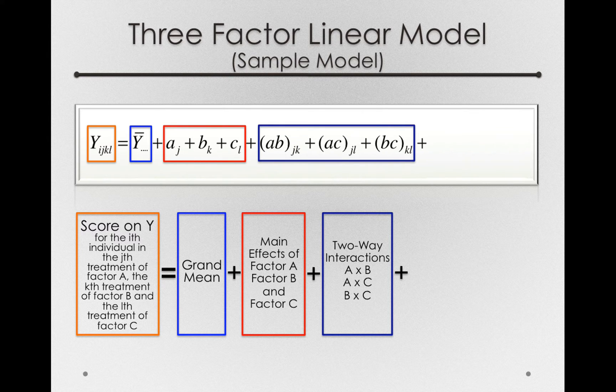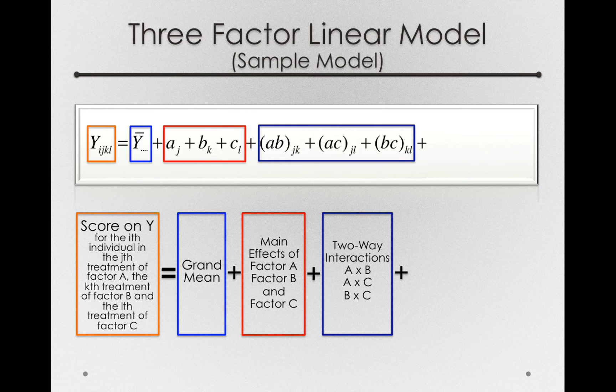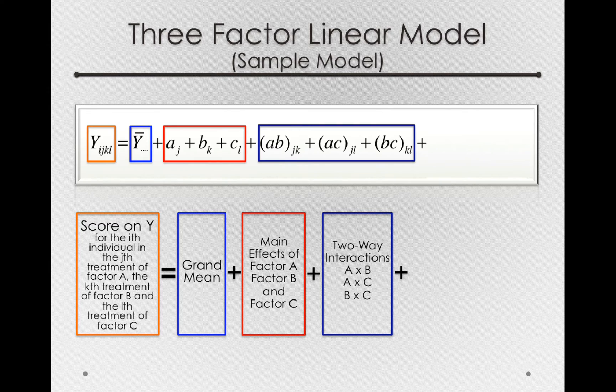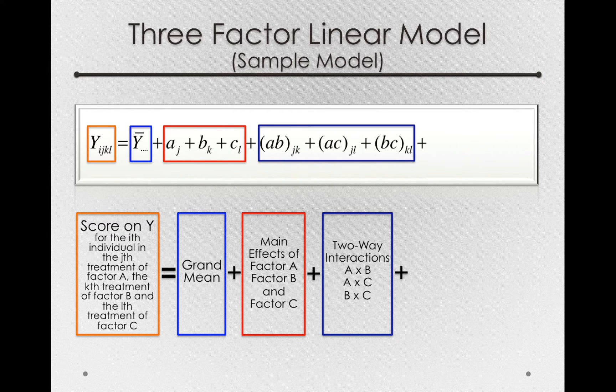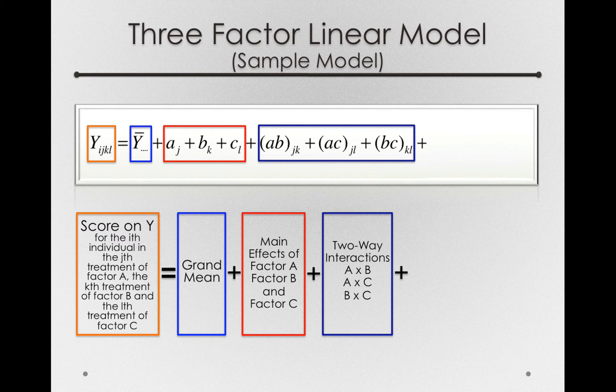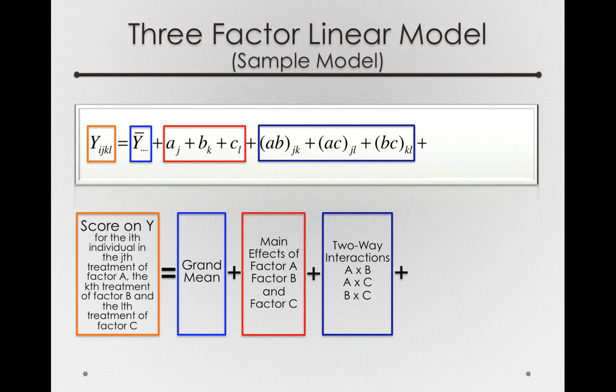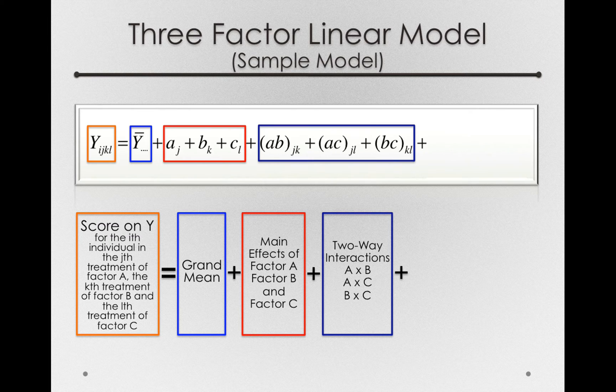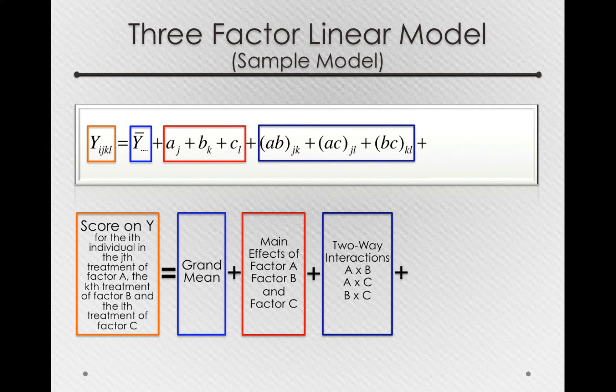The ab_jk's, the degree to which A effects depend on B, or B effects depend on A, plus the AC interaction terms, the degree to which A effects depend on the level of C, or the degree to which the effects of C depend on the level of A, so the ac_jl's. And finally, the BC interaction terms, the degree to which B effects depend on the level of C, or the degree to which the C effects depend on the level of B. These interactions, although we have more of them, can be interpreted in the exact same way, just the degree to which our model effects differ from a purely additive structure.